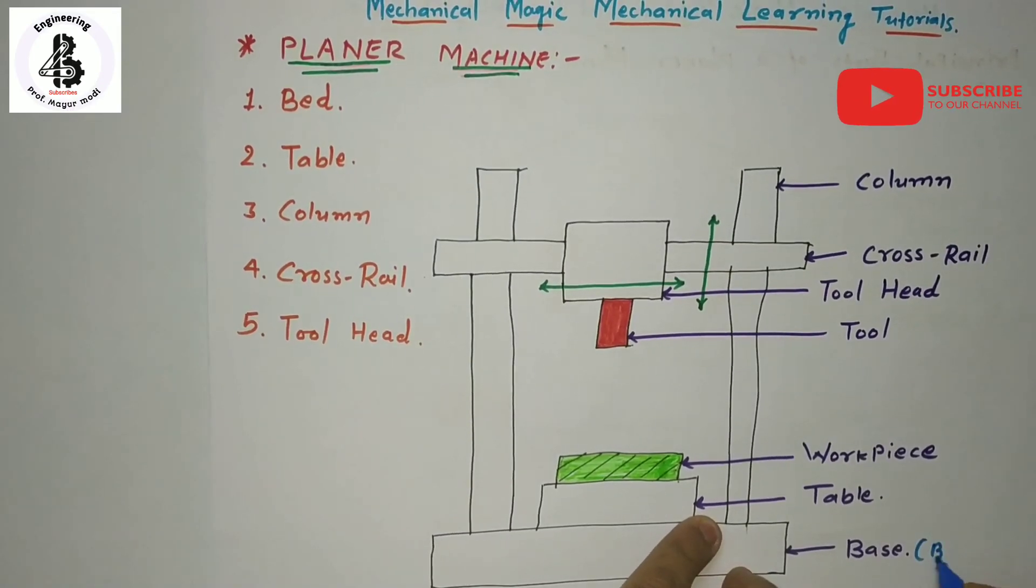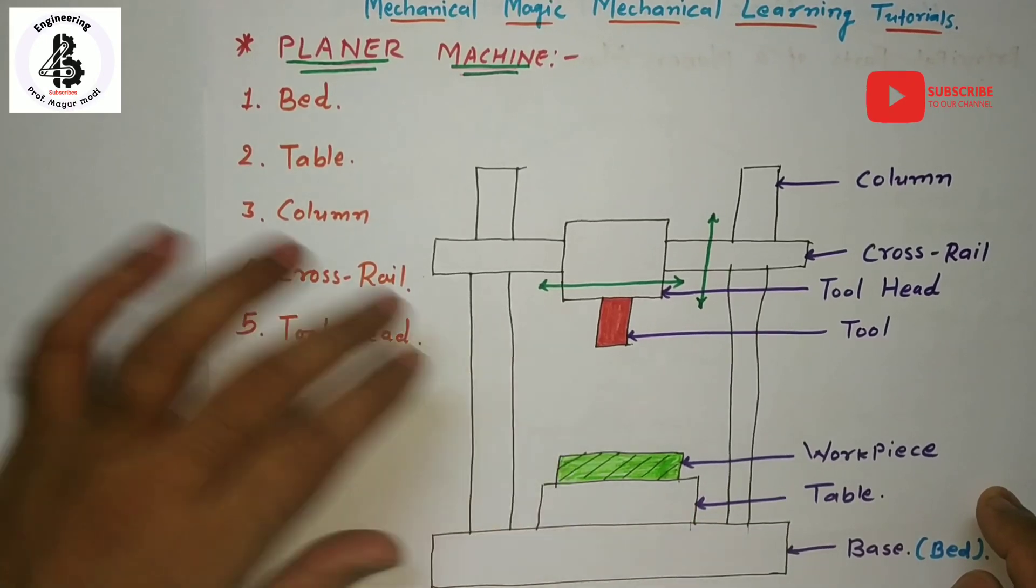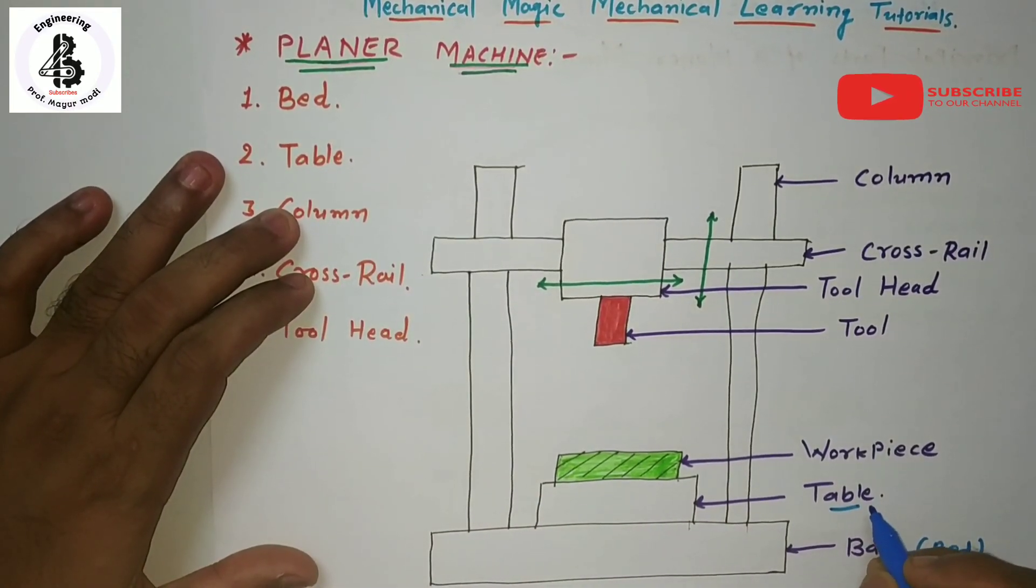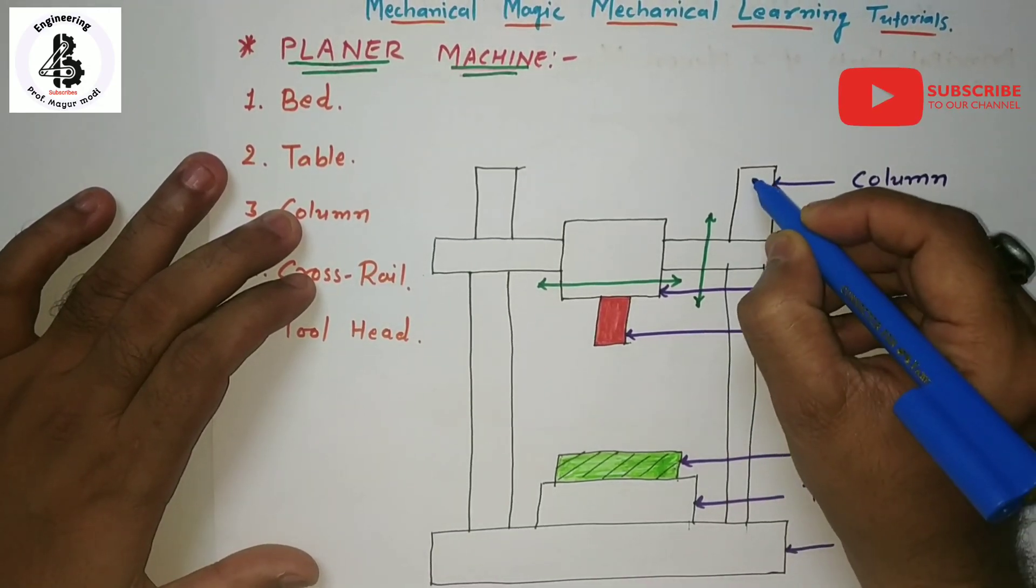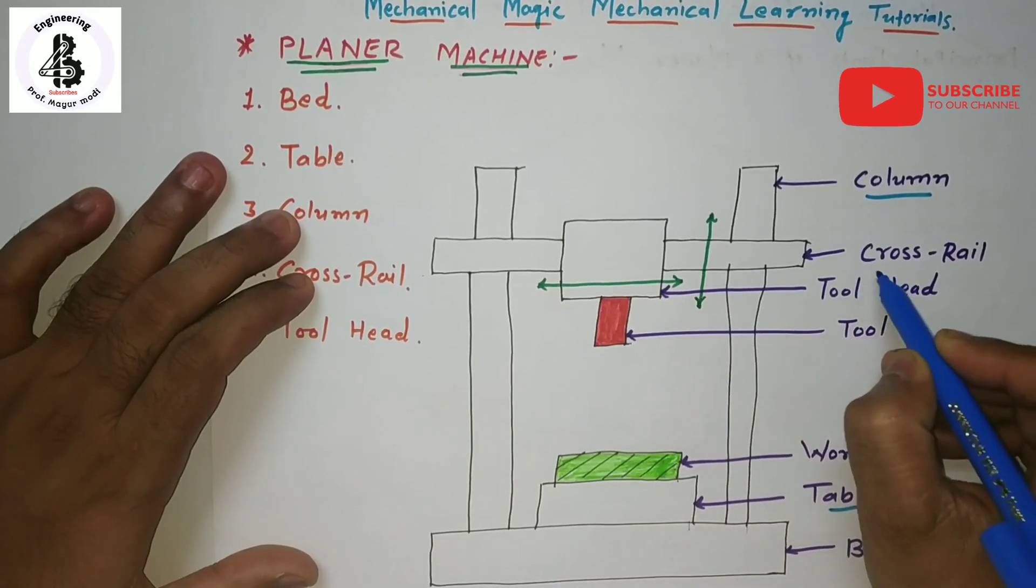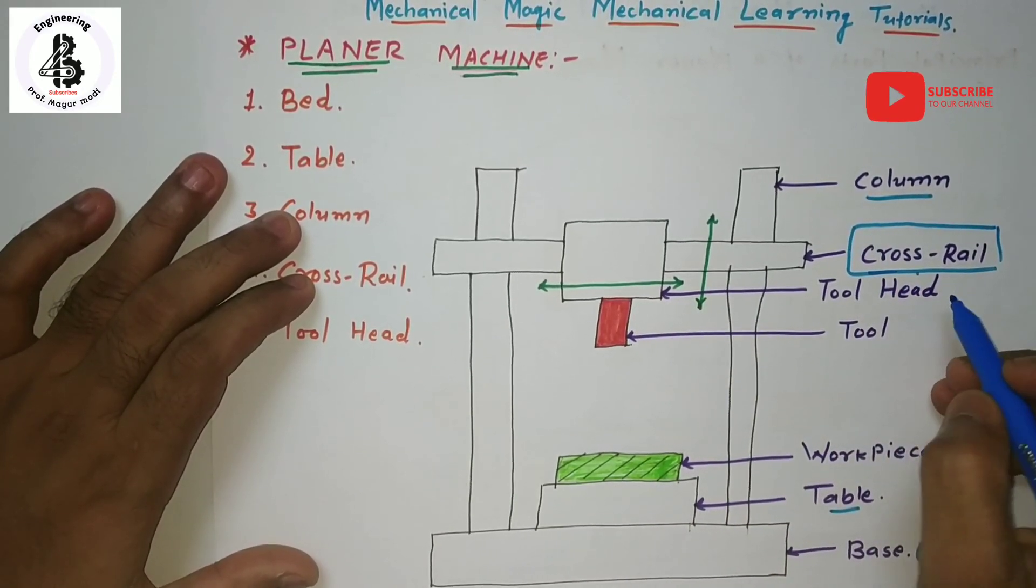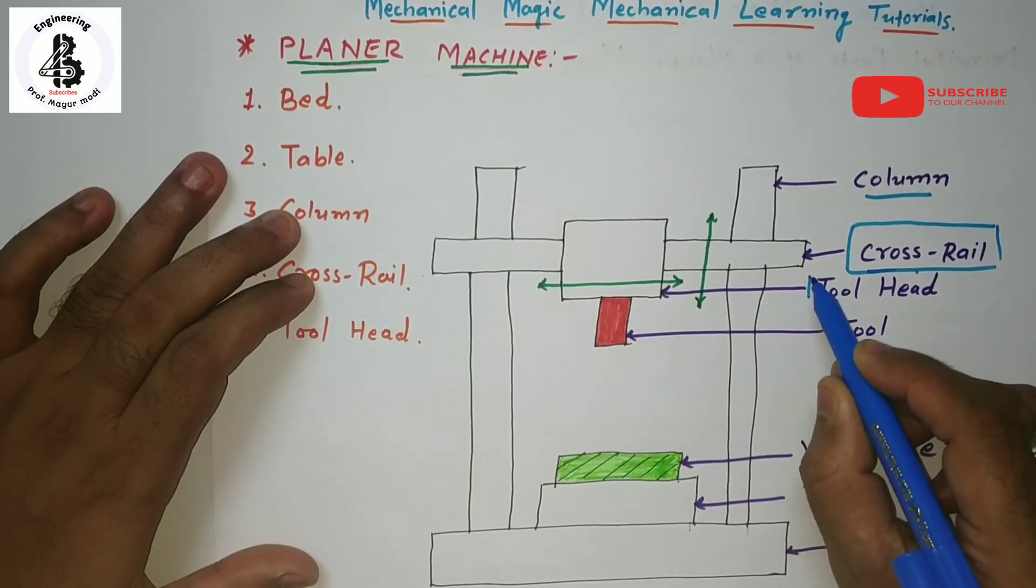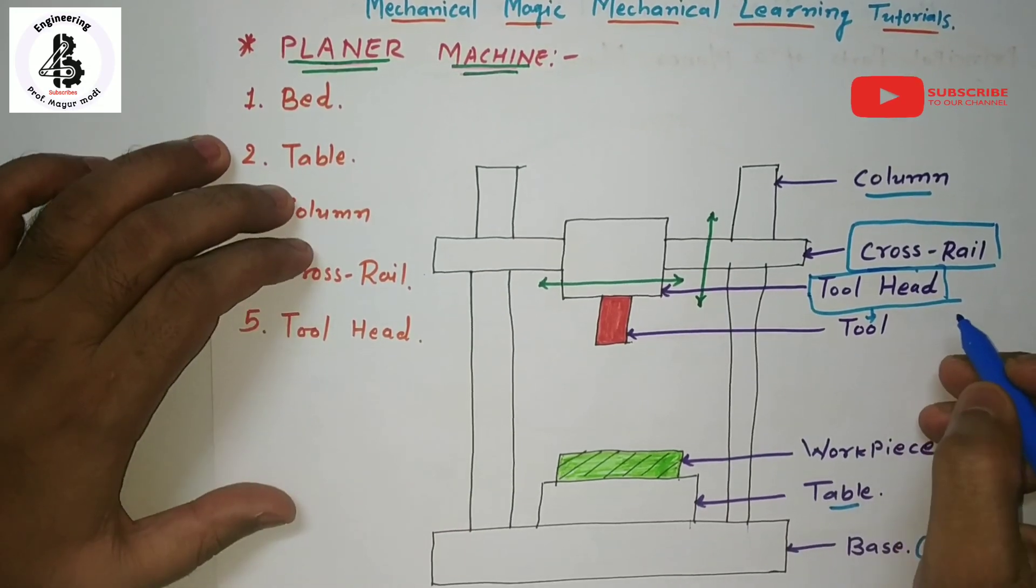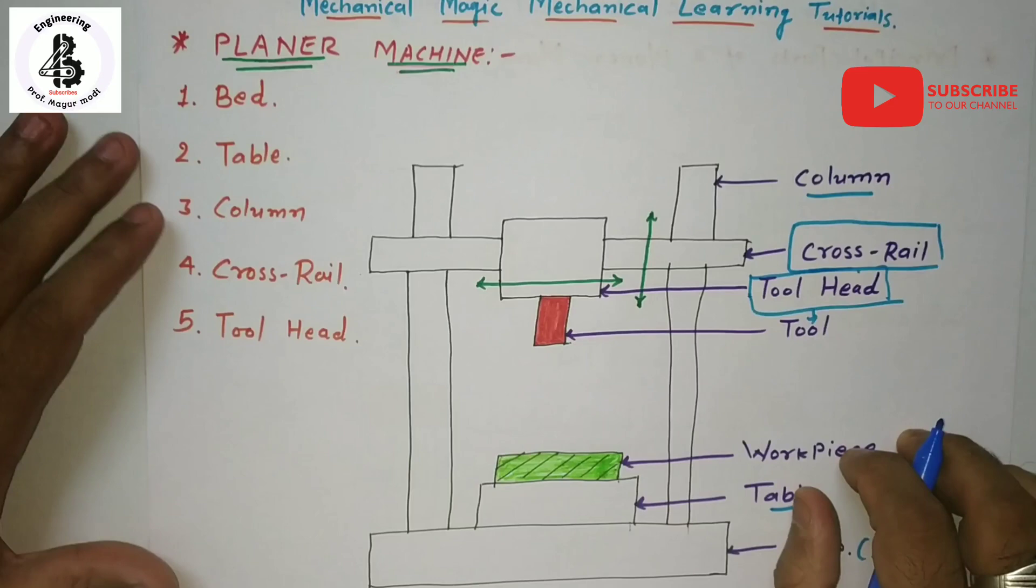The base or bed of the machine, then the second important part table, then the column of the machine, then the important part that will be the cross rail and tool head with the tool post mechanism. Let us see in detail. First one.